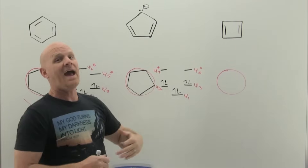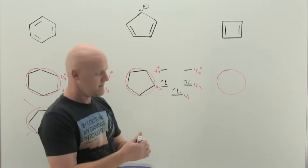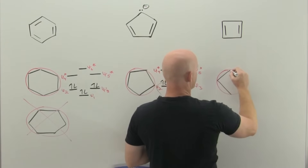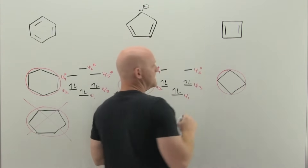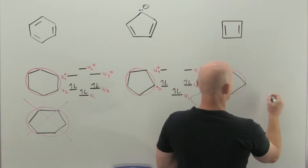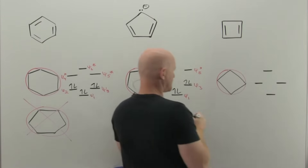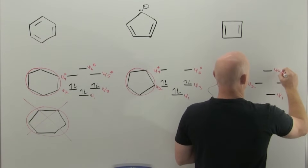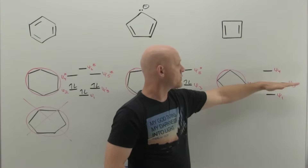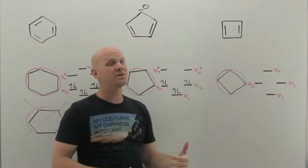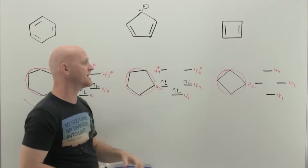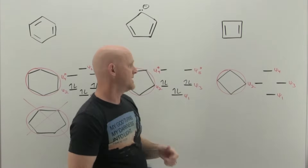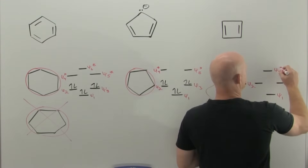We can also use this method to explain why anti-aromatic compounds are unstable. For cyclobutadiene, we inscribe a square in a circle with a vertex pointing down. We get four molecular orbitals: psi 1, psi 2, psi 3, and psi 4. Psi 2 and psi 3 are degenerate and fall right on the midline — they're non-bonding, unlike with benzene or the cyclopentadienyl anion. Psi 4 is anti-bonding.